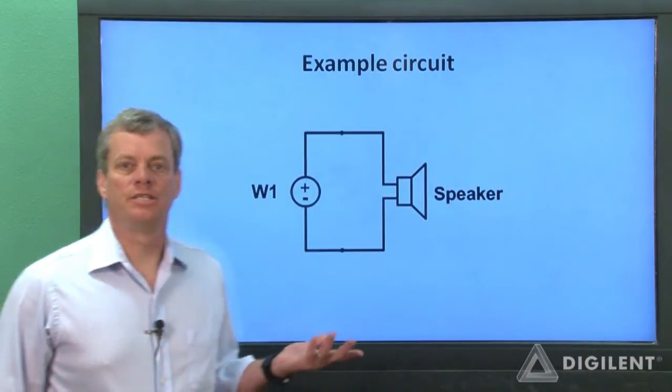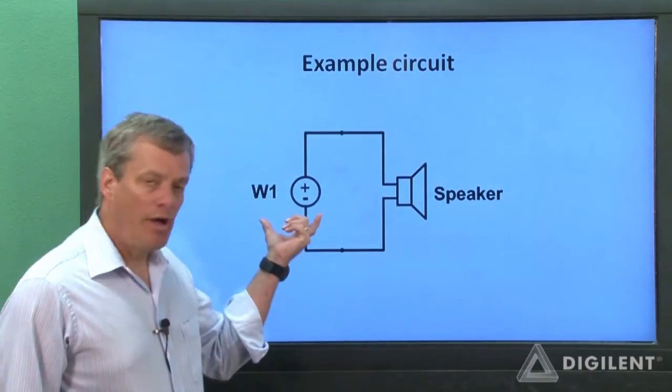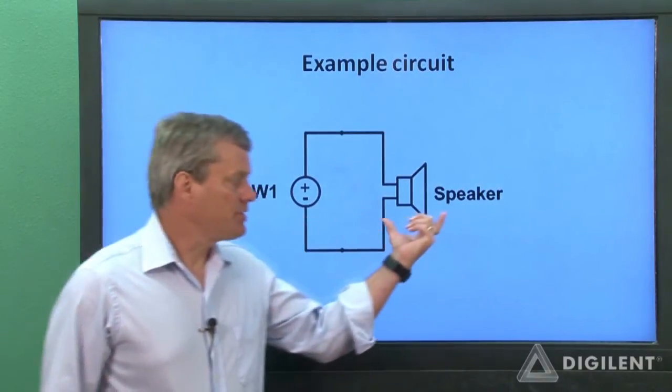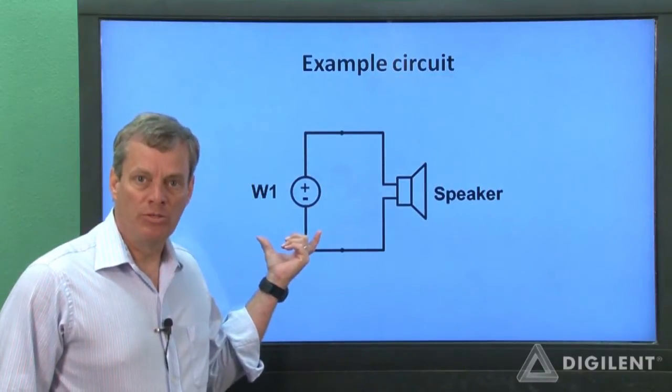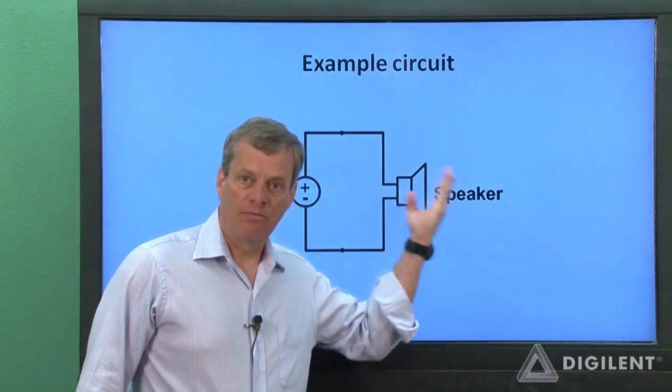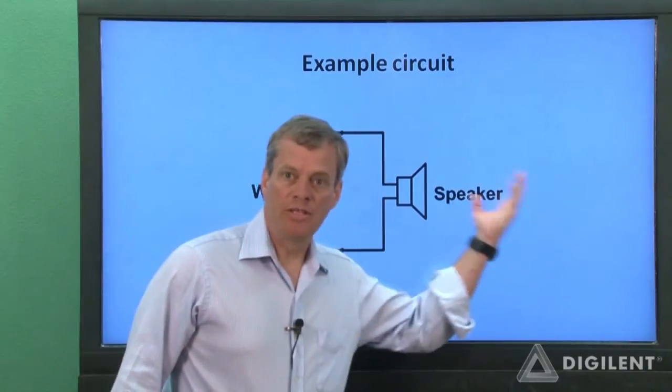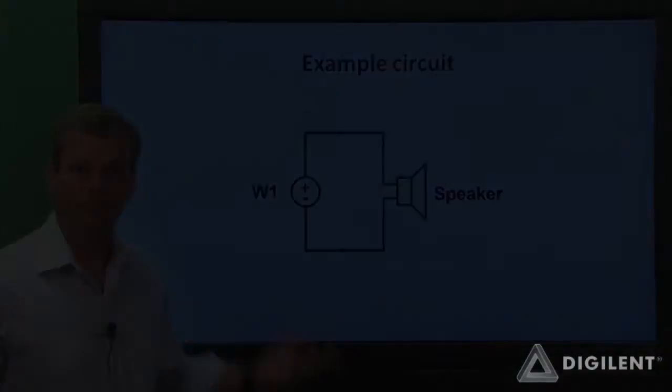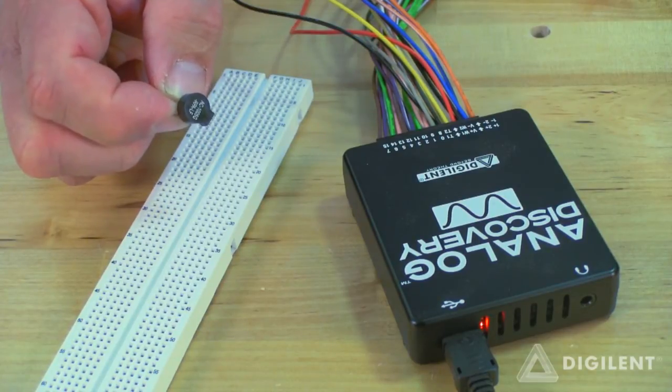The circuit for this project is extremely simple. We just want to connect the terminals of channel 1 of our waveform generator to a speaker. Then the sinusoidal voltages created by the waveform generator will be applied to the speaker, causing a film in the speaker to vibrate, also sinusoidally, which creates pressure waves in the air which we'll hear as tones. We can implement our circuit using this little speaker from the analog parts kit.